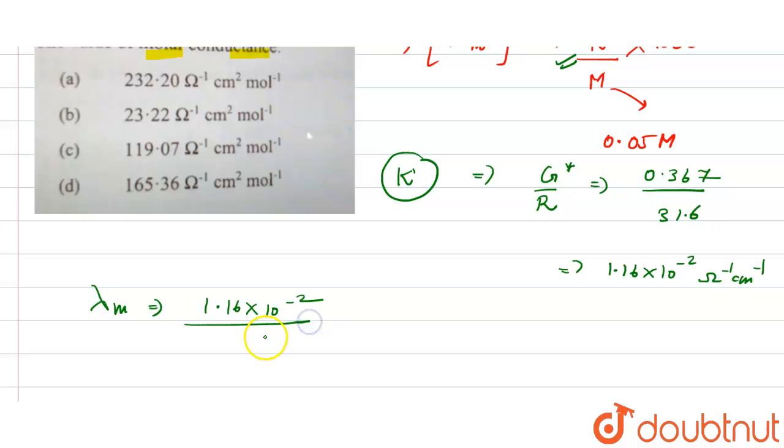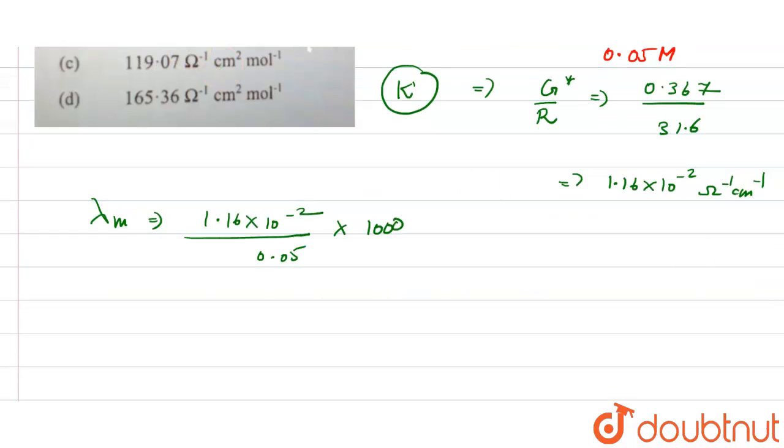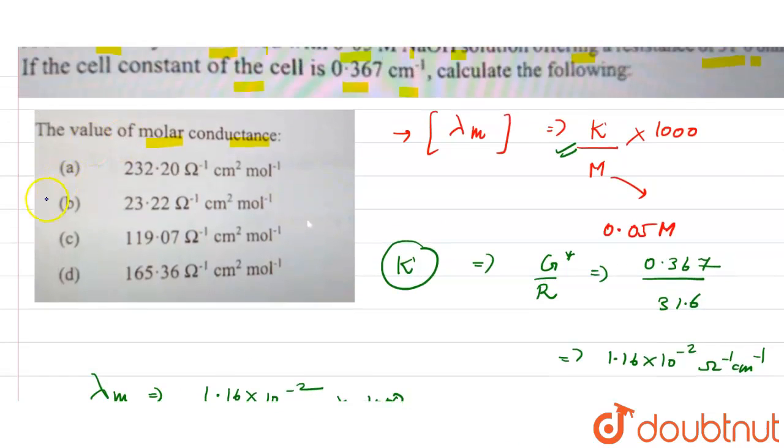Multiplied with the 1000. So the value comes out to be around 232.2 ohm inverse centimeter square per mole. So the correct answer of this question is option number A. Thank you.